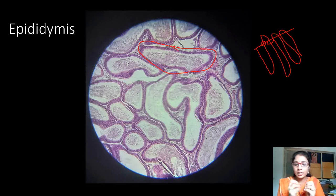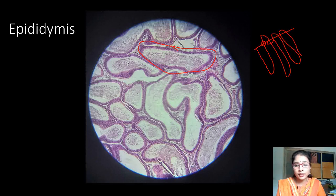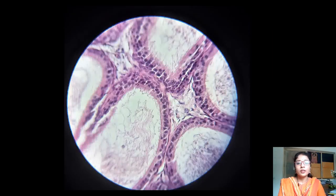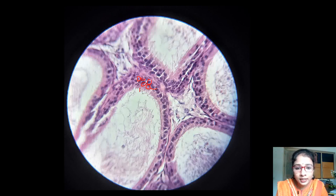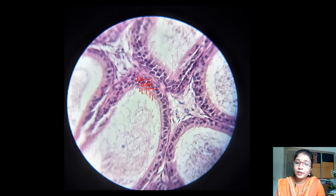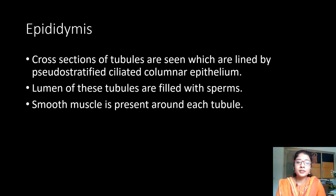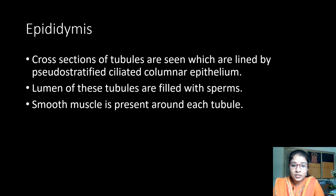The smooth muscle fibers help the movement of sperms from the epididymis to vas deferens. The internal lining of the epididymis is lined by pseudostratified ciliated epithelium. At 45x magnification we can see the nuclei at various levels, confirming pseudostratified columnar epithelium. The cilia here are not mobile — they are stereocilia, meant for absorption of excess fluid in the lumen, not for moving sperms. Identification points: cross sections of tubules lined by pseudostratified stereocilia epithelium; lumen filled with sperms; smooth muscles present around each tubule.